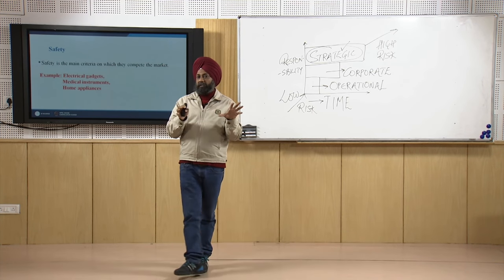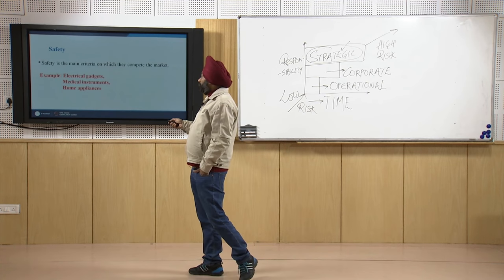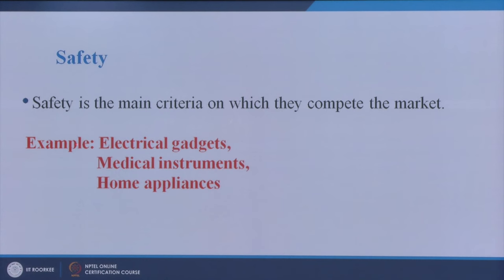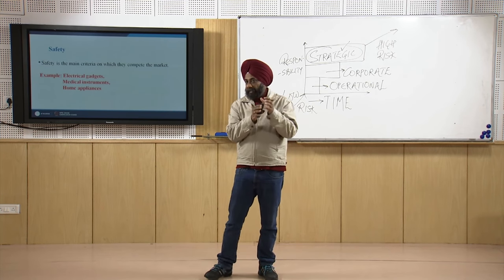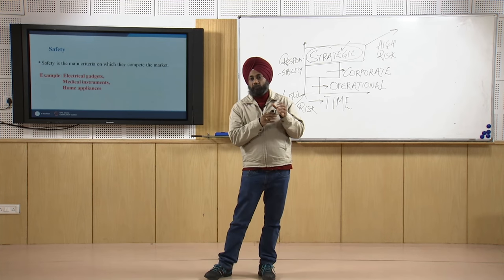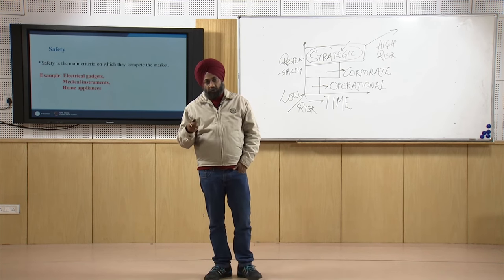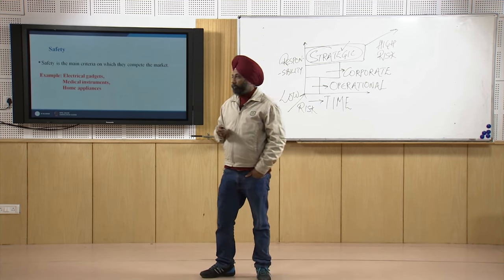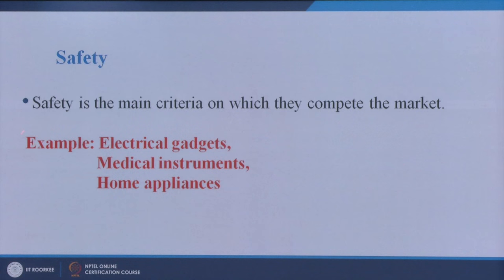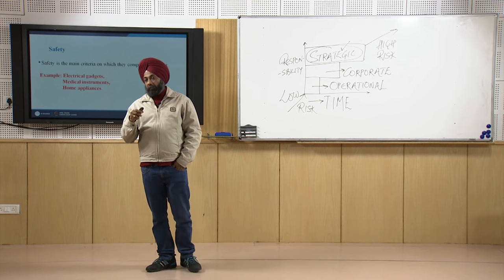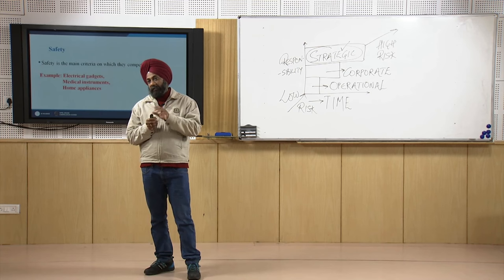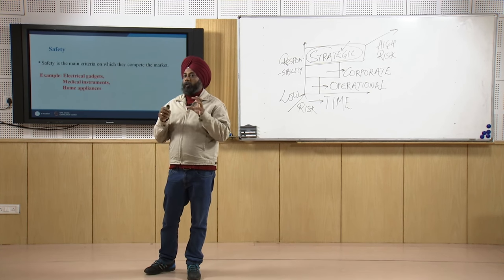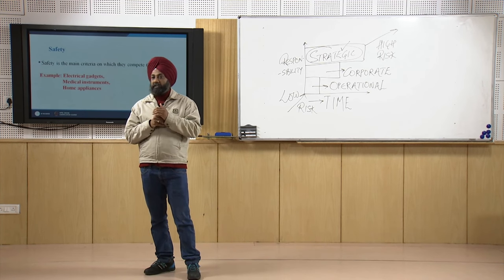The fourth policy is safety. Safety is in any case taken care of by the other three criteria, but many companies focus specifically on safety as the main criteria by which they compete in the market. Examples include electrical gadgets, medical instruments, and home appliances — these are areas where safety is the most important criteria for designing the product, even though cost and quality still matter.